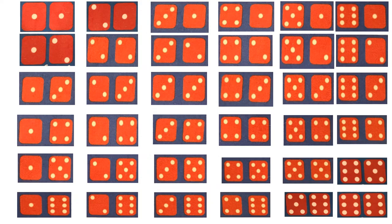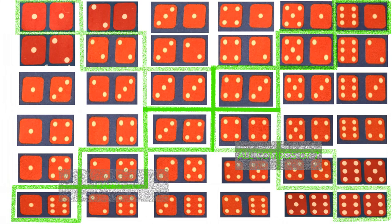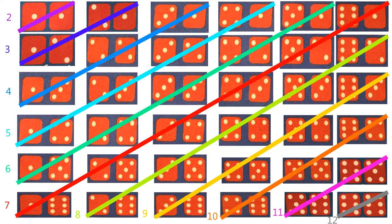Here we are looking at all the possible outcomes of two six-sided dice. All dice combinations with an outcome of seven travel diagonally from the bottom left to the top right, inverting at the halfway mark: one-six, two-five, three-four, four-three, five-two, and six-one. Opposite to that, all pairs run diagonally from the top left to the bottom right, with two and six on the outside and the hard ways on the inside. All combinations for each number from two to twelve also appear in a diagonal upward pattern — just an interesting pattern.